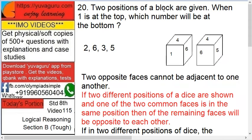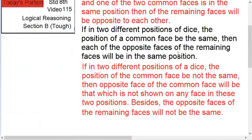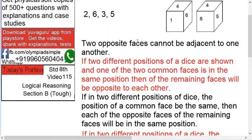Next, two positions of a block are given. When one is at the top, which number will be at the bottom? Say this block, you can call this dice also. Same logic applies everywhere. Remember four thumb rules for this. Actually there are four, but not all are useful for you. At least remember two.